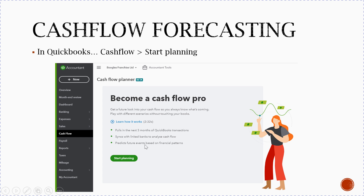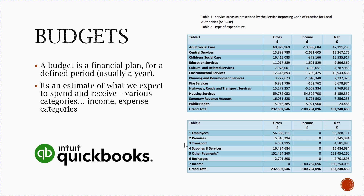The QuickBooks cash flow planner will pull in the next three months of transactions, sync with linked banks to analyze cash flow, and predict future events based on financial patterns. For example, in a service-based business with regular customers, someone might always pay on the last Thursday of the month, so the system analyzes the pattern and tells you where payments are likely to land.